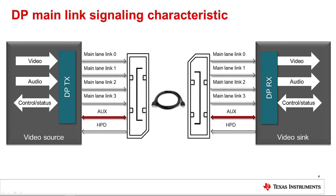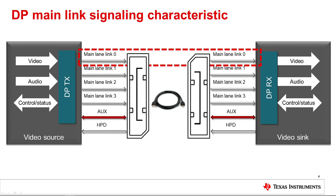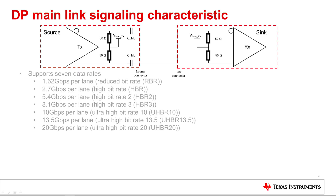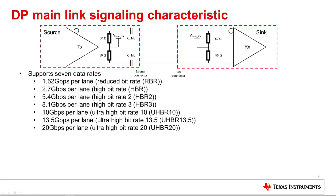In a standard DP connection, each lane has a dedicated set of twisted pair wires and transmits data across it using differential signaling. There is no dedicated clock lane with a DP connection, as the clock is embedded into the data. DisplayPort only operates at a specific data rate. The DisplayPort 2.0 standard defines seven data rates across the main link: 1.62 gigabits per second, or RBR.